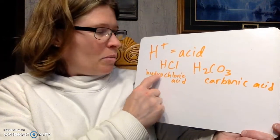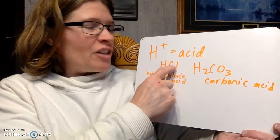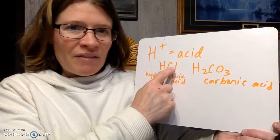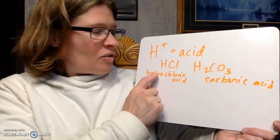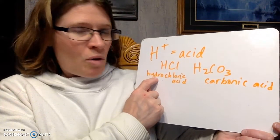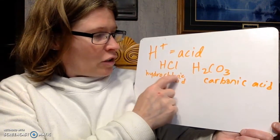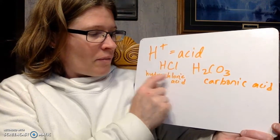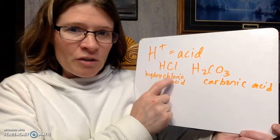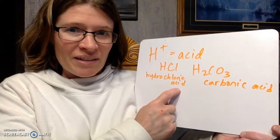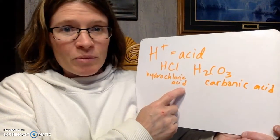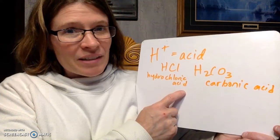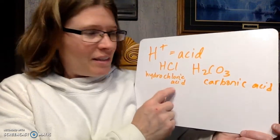In the name, HCl doesn't have an oxygen, so we put 'hydro' out front, and then 'chlor' is the root for chlorine, so it becomes hydrochloric acid. The second word is always 'acid' in an acid.